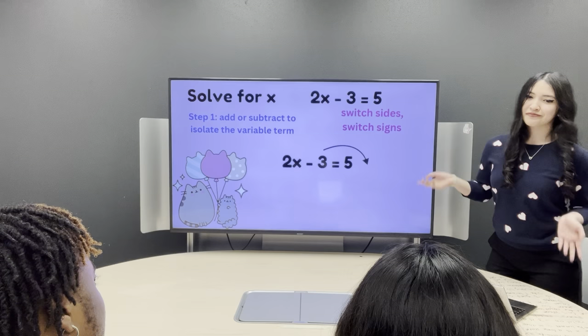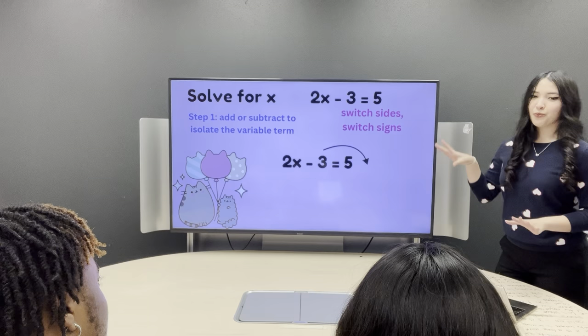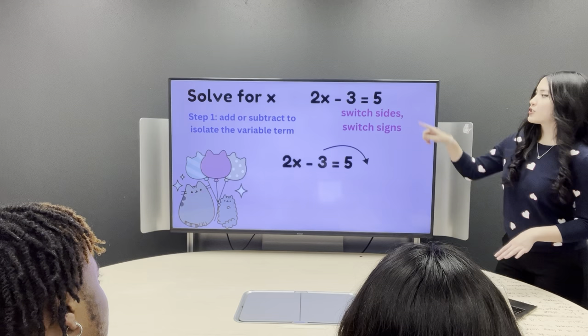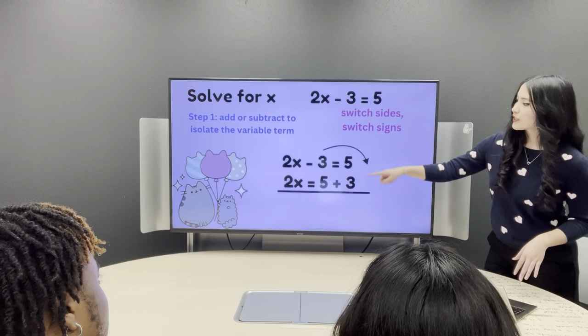We can use what is called switch up, where you move negative 3 over the equal sign and it switches signs. Remember, switch sides, switch the sign. So, negative 3 goes over to 5's side and becomes positive 3, leaving us with 5 plus 3.